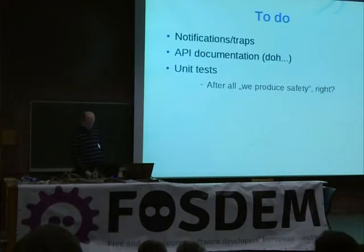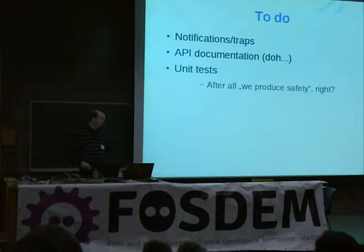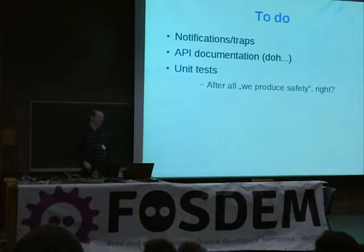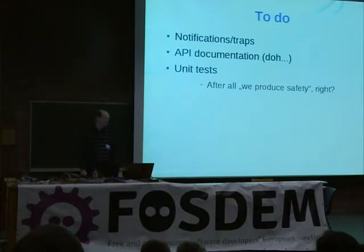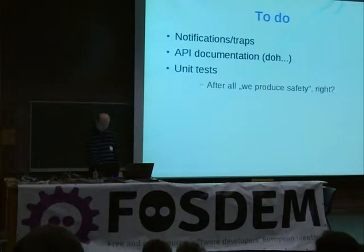Just so you know, there are some things missing, of course — notifications and traps in particular. So as of now, you can't write an agent which informs the master agent of, for example, a fan failure or anything like that. API documentation — who would have thought — and maybe some unit tests. After all, we're producing safety-related software, so it would be nice to have elementary software modules have tests as well.